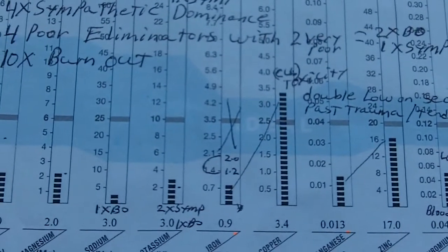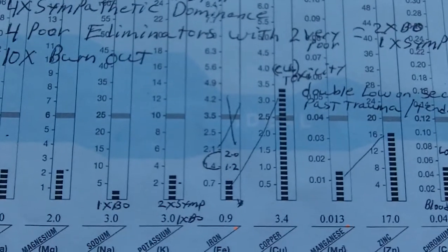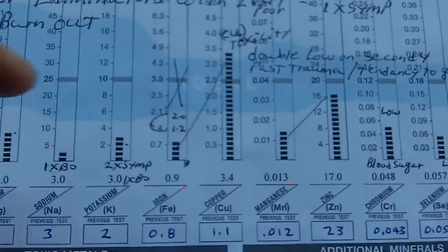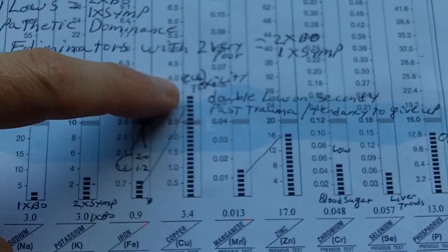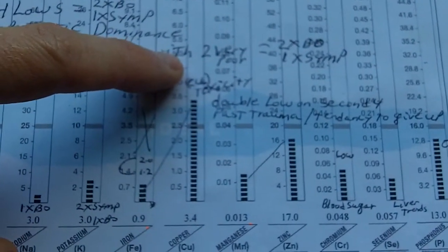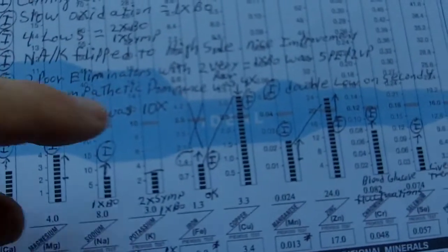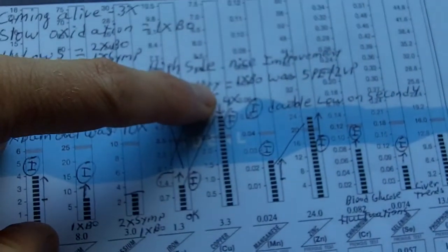After changing a lot of things—diet, lifestyle—copper levels have come up, and that's common. They'll peak and they'll come back down. The following test, about six months later, it has actually peaked and it's on the way down.